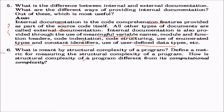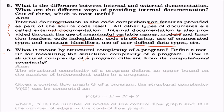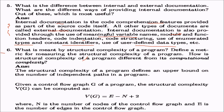What is meant by structural complexity of a program, and how is it different from computational complexity? Structural complexity defines an upper bound on the number of independent parts in a program. Given a control flow graph, it can be computed as E minus N plus 2, where N is the number of nodes and E is the number of edges in the control flow graph.